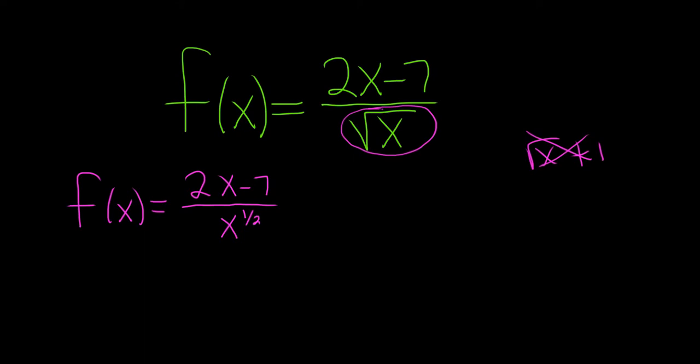The next step is the key step in this problem. It's to break it up. So f(x) equals 2x divided by x to the 1/2 minus 7 divided by x to the 1/2.